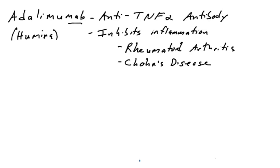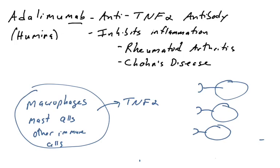TNF-alpha is secreted at very high levels in some autoimmune disorders, causing massive inflammation and tissue destruction — very bad things. Secreting TNF-alpha is a normal part of the job of macrophages, mast cells, and other immune cells. TNF-alpha is a pro-inflammatory cytokine. It binds endothelial cells and triggers localized inflammation in tissues, goes to the liver, goes to the hypothalamus. But in some individuals, they're producing too much TNF-alpha, maybe because of an autoimmune disorder, causing excessive inflammation.